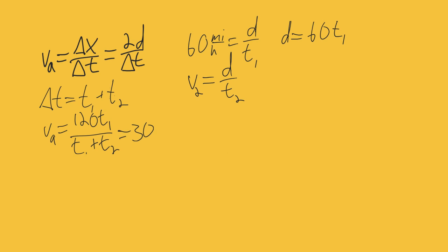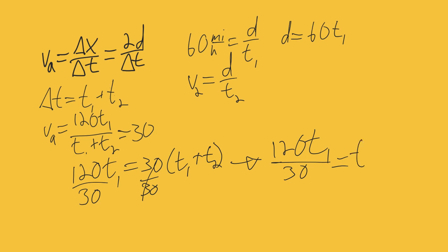So how I'm going to do that is I am going to get all my t1s on the same side and then solve for t2. So the first thing is, is going to be 120 t1 equals 30 times t1 plus t2. And since I want t2 by itself, I'm going to divide both sides by 30.